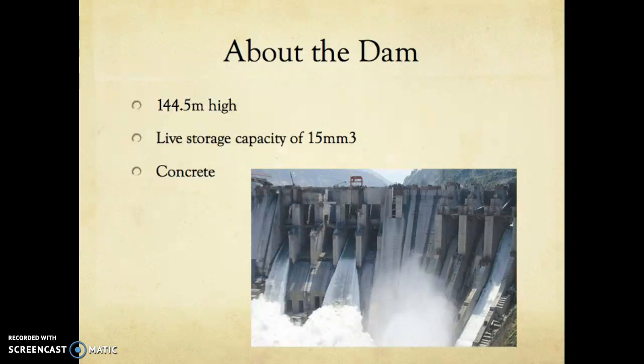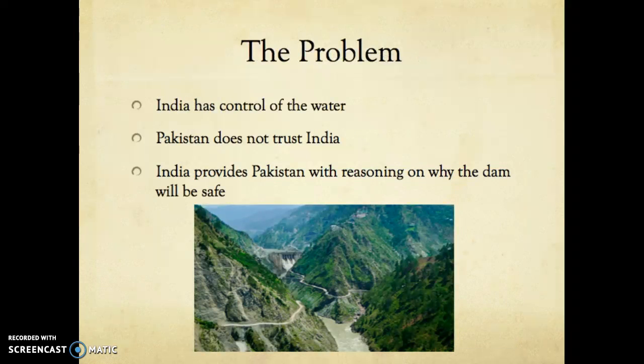The dam is 144.5 meters high with a live storage capacity of 15 million cubic meters. It's completely concrete, and the problem with the dam is that India now has control of the water on the Chenab River, which is supposed to be Pakistan's.